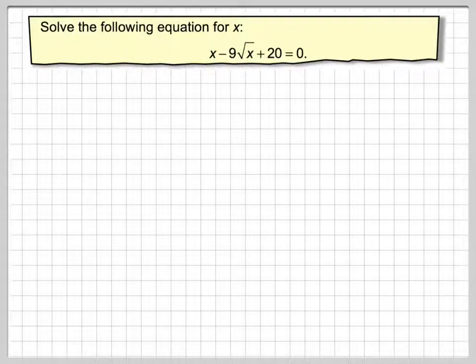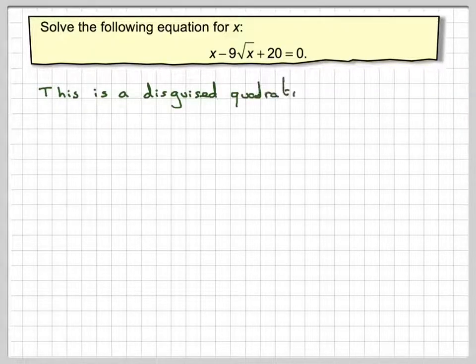Solve the following equation for x. We've got x minus 9 root x plus 20 is equal to 0. This is another what's known as a disguised quadratic.